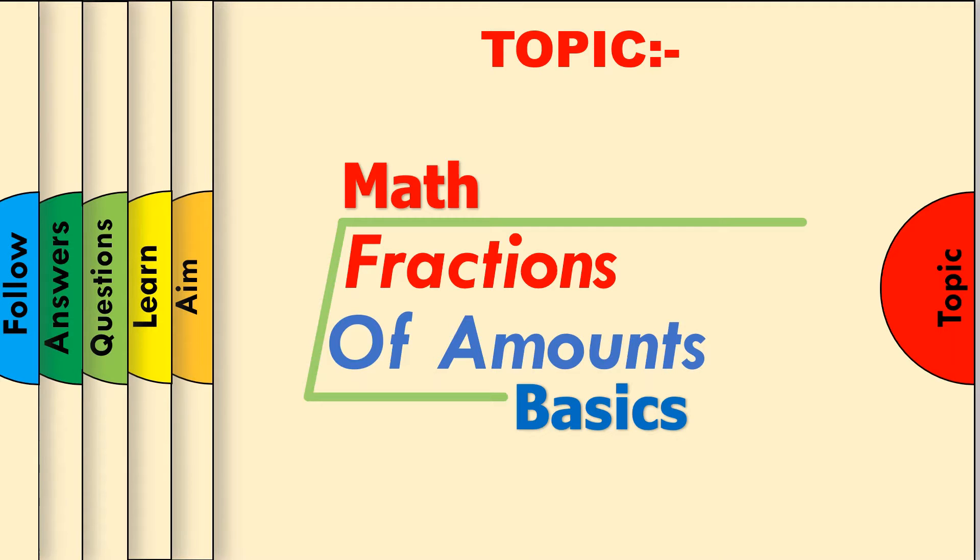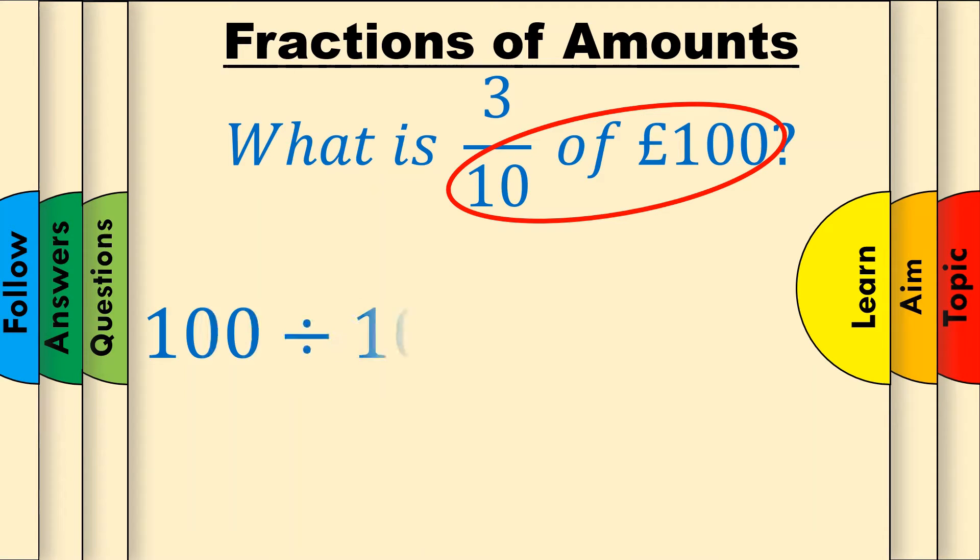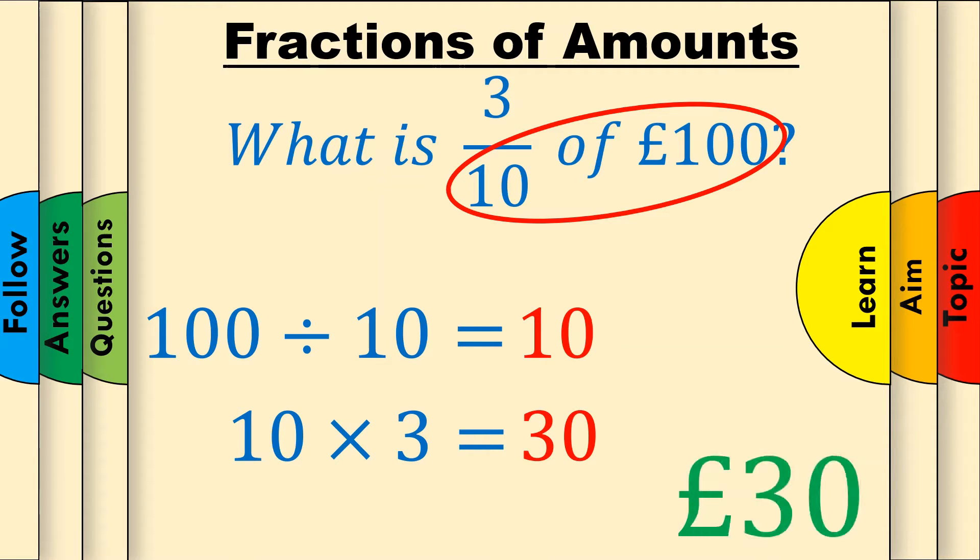Here's a walkthrough example. What is 3 over 10 of 100 pounds? First, divide the amount, 100 pounds, by the denominator of the fraction, 10. This gives us 10. Now, multiply this by the numerator of the fraction, which is 3. This gives us the final answer of 30 pounds. Remember to pop in the units.